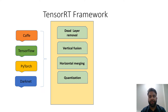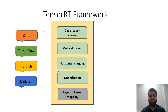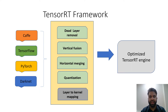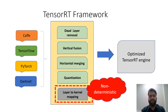Then we have quantization, which is an optimization step performed by TensorRT that maps FP32 floating-point 32 to floating-point 16 or integer 8, depending on whether the architecture supports it. The last step is called layer-to-kernel mapping, where different CNN layers are mapped to different GPU kernels — the functions that actually get executed on the GPU. After all these steps, we obtain an optimized TensorRT engine.